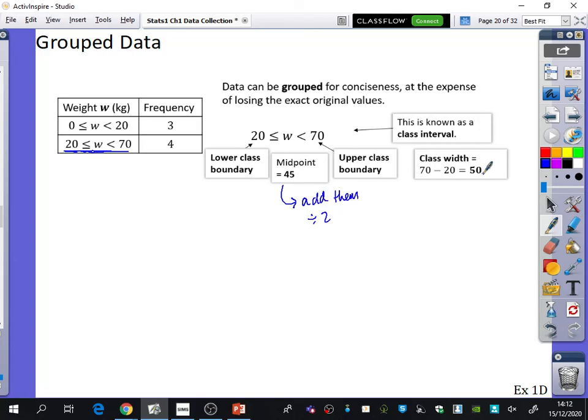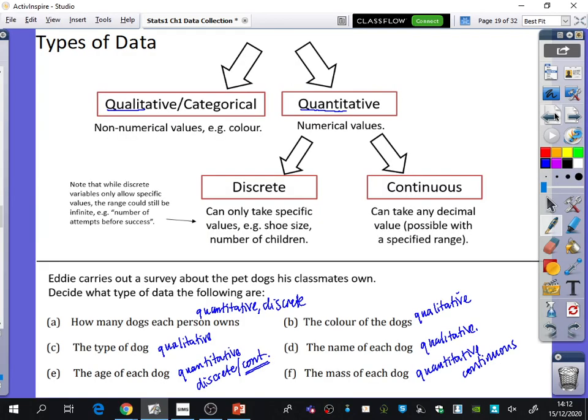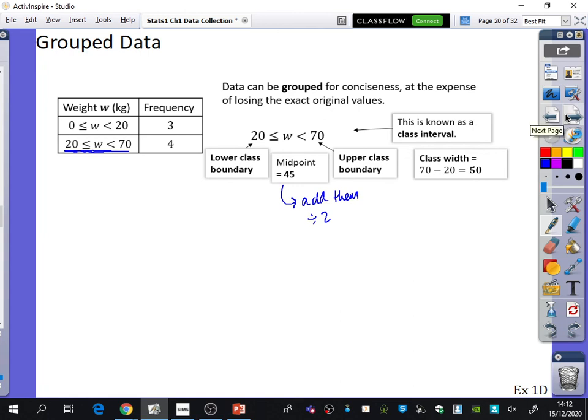You just add them, get the total, and divide it by 2. So the midpoint of this is going to be 45. And you also need to know that the class width is how wide that group is. It's going to be 70 take away 20. It's the gap between them, which is 50. So the class width of this is 50. Just to break down what this is actually saying, the weights of the dogs are between 20 kilograms. They could be equal to 20 kilograms, but they have to be less than 70 kilograms. And that's just how the class intervals work. So you're going to do at home, you're going to do exercise 1D and think about the different kinds of things to do with different types of data and grouped data as well.